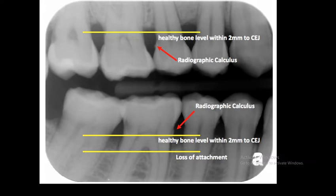After probing the sulcus and recording the depth of the pocket and the tissue attachment loss, it is necessary to wait about 20 seconds to see if there is any bleeding from the pocket, as bleeding is a sign of active inflammation.